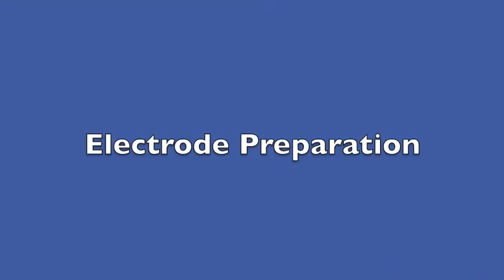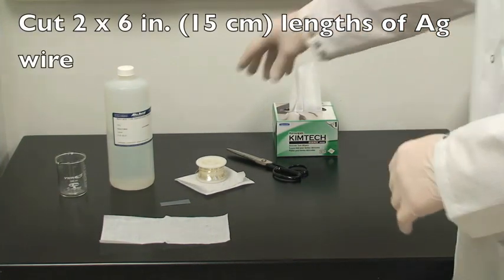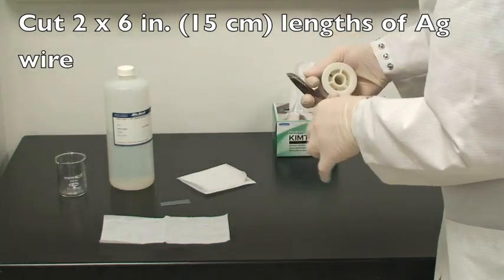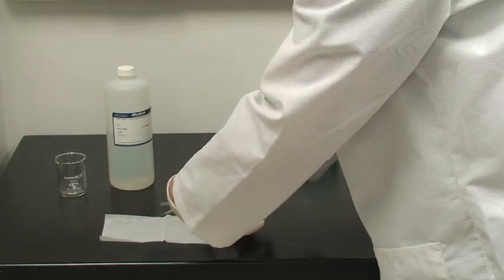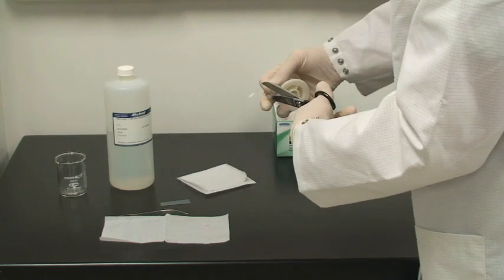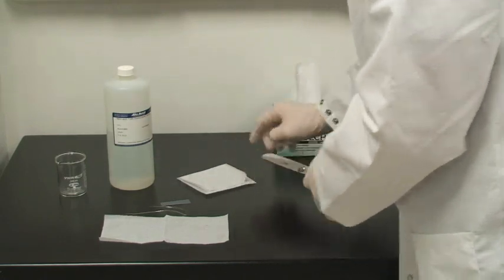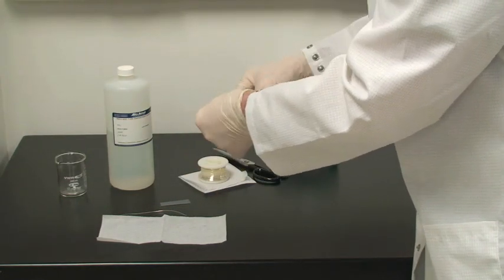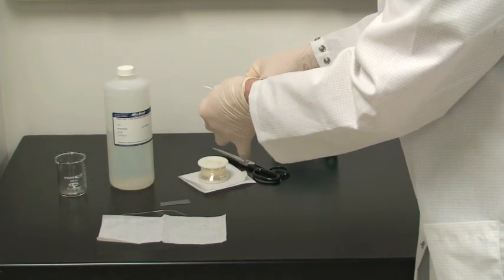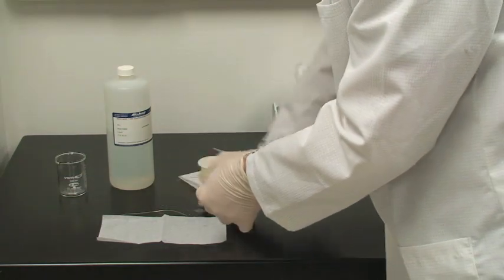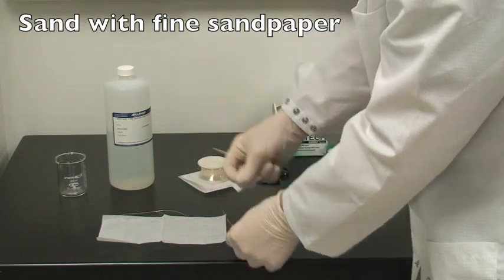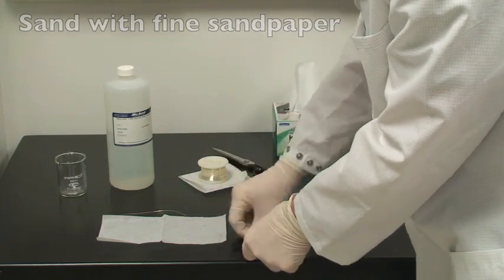Electrode Preparation: Begin by cutting two 6-inch lengths of Silver Wire. Next, lightly sand the bottom 1-2 inches of each wire to remove any oxidation or impurities.